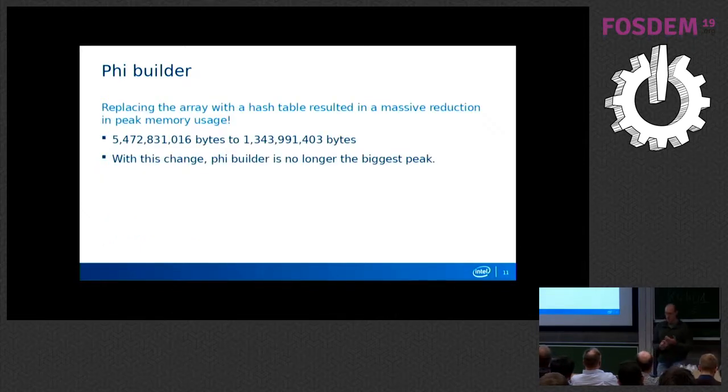So replaced that simple array with a hash table and it slashed the memory usage. We went from just a little over around 5.4 gigabytes to about 1.3. I was going to show the massif output after the change, but I'm running a little bit low on time. I might come to that. But the cool thing that shows up in that, in the after massif output is that first peak is basically gone. And that part of the program is no longer the long pole. So there's a couple other peaks later on. But phi builder is not the critical memory usage path anymore.